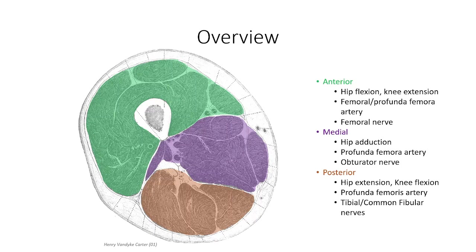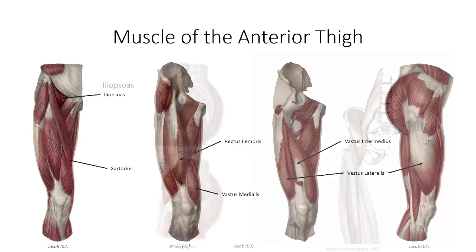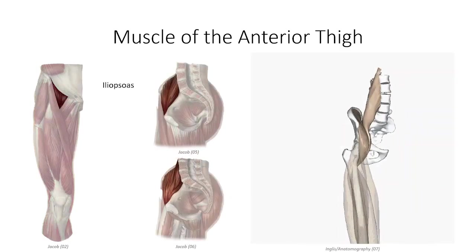This is a good summary slide to refer back to in order to maintain focus on the big picture. The principal muscle of the thigh is the quadriceps femoris muscle. As the name implies, it is composed of four separate heads, all of which insert on the superior border of the patella as the quadriceps femoris tendon. The patella serves as a sesamoid bone, forcing the tendon of the quadriceps anteriorly and increasing its mechanical advantage.